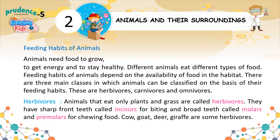Feeding Habits of Animals. Animals need food to grow, to get energy, and to stay healthy. Different animals eat different types of food. Feeding habits of animals depend on the availability of food in the habitat. There are three main classes in which animals can be classified on the basis of their feeding habits: herbivores, carnivores, and omnivores.